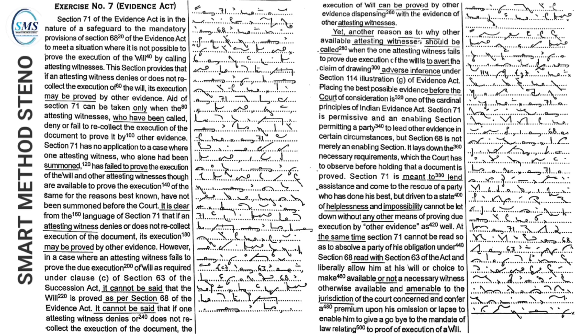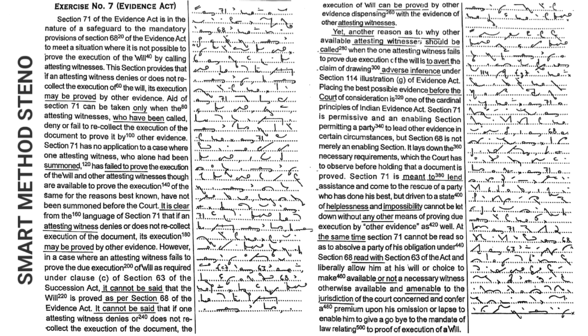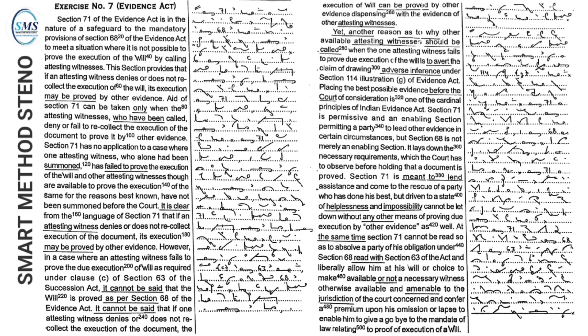Section 71 of the Evidence Act is in the nature of a safeguard to the mandatory provisions of Section 68 of the Evidence Act, to meet a situation where it is not possible to prove the execution of the will by calling attesting witnesses. This section provides that if an attesting witness denies or does not recollect the execution of the will, its execution may be proved by other evidence.